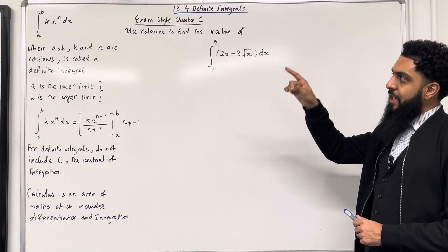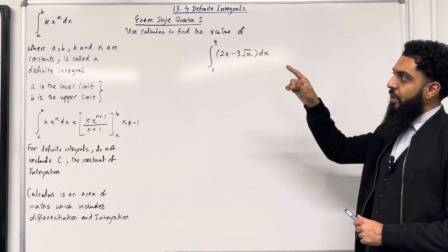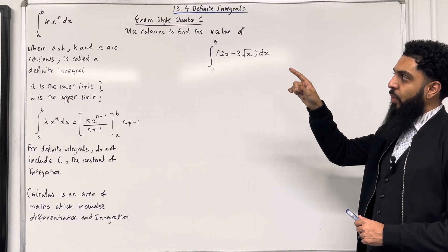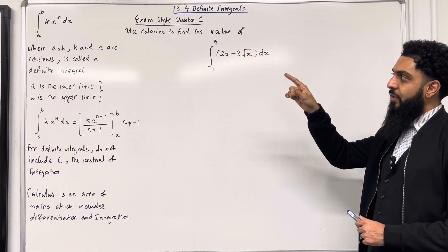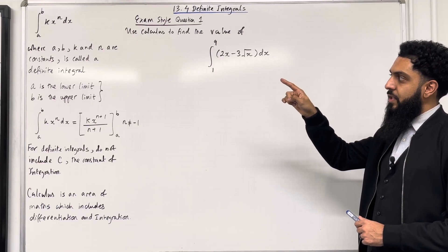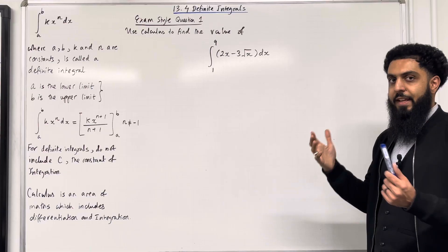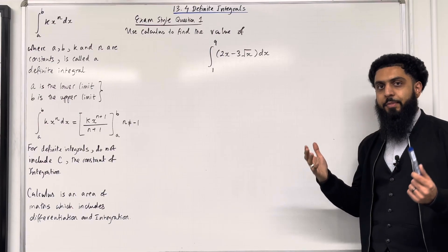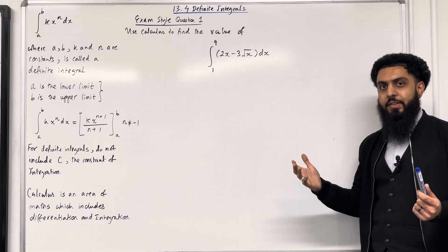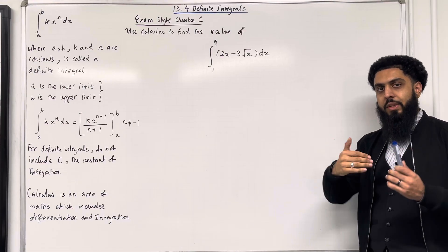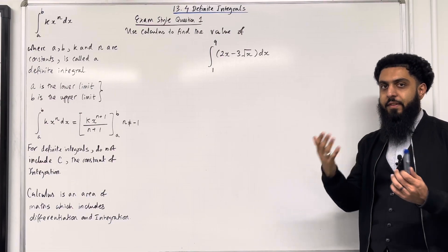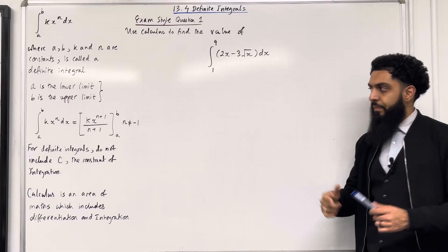The integral from A to B of Kx to the power n dx, where A, B, K and N are constants, is called the definite integral. A is the lower limit, B is the upper limit. So in general, an integral with limits is called the definite integral.